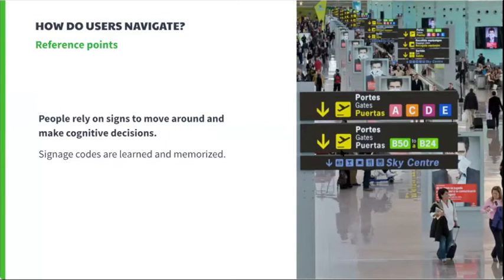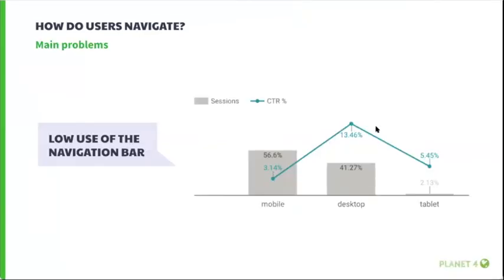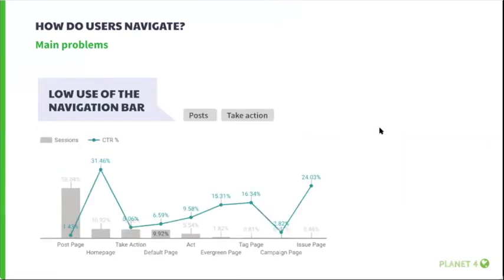Let's see how P4 users use the navigation system. One of the main problems identified is low use of the navigation bar — 13.5 percent of sessions interact with the navigation bar on desktop, which is about 100 percent more than the mobile rate, probably due to the hidden navigation on mobile. Users barely click on the navigation bar when visiting post and take action pages specifically. This may be due to unclear labels — when labels match what people are looking for, they are more likely to click on them.